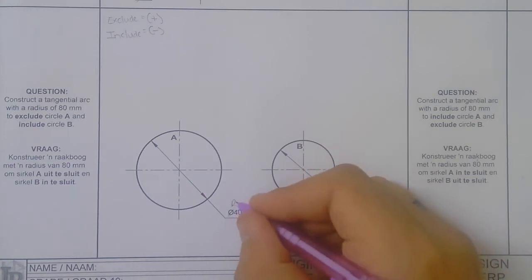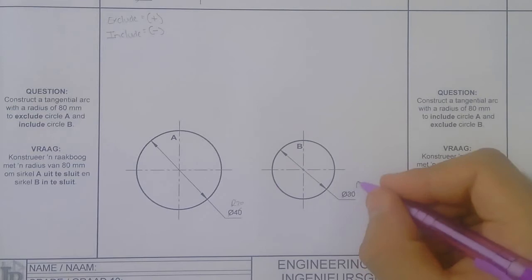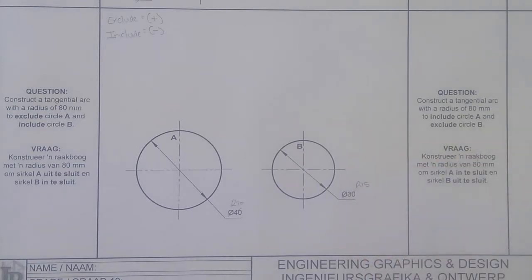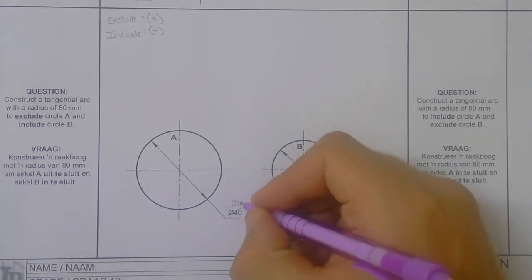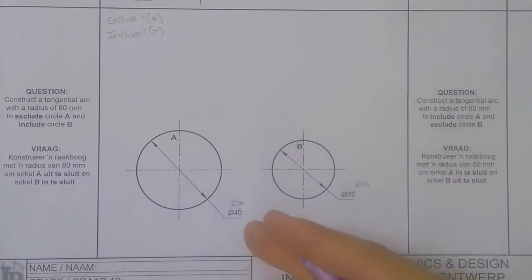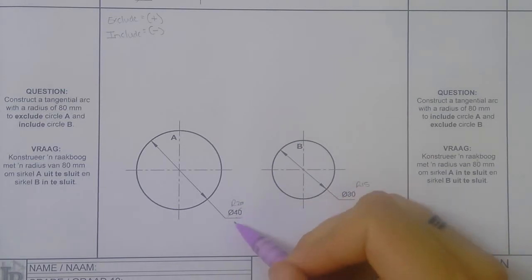Radius of 20, radius of 50. Radius of 20 and radius of 15 because we have the diameter, we half it by 2 and then we get our radius. So it says exclude circle A.